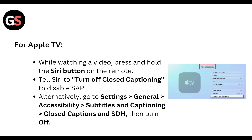For Apple TV, while watching the video, press and hold the Siri button on the remote and tell Siri to turn off closed captioning to disable SAP. Alternatively, go to Settings, then General, then Accessibility, then Subtitles and Captioning, then Closed Captions and SDH, then turn off.